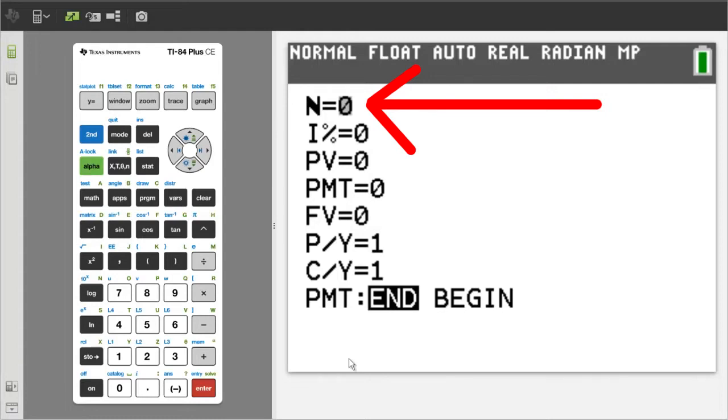For this problem, the money is compounded one time a year for 3 years. 1 times 3 equals 3. So enter a 3 for N.